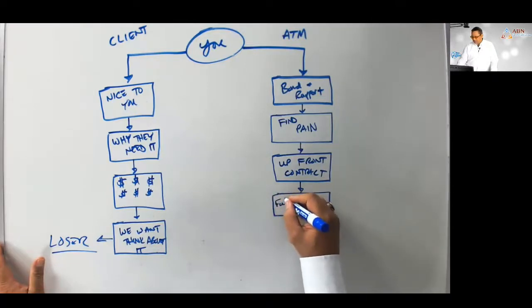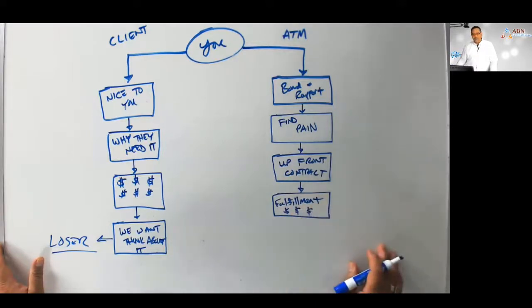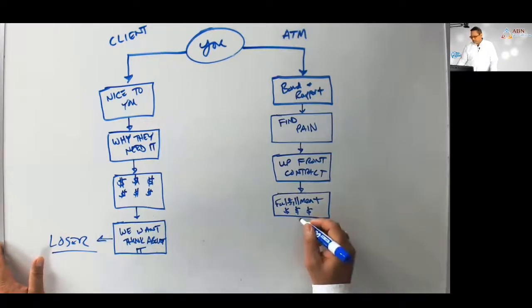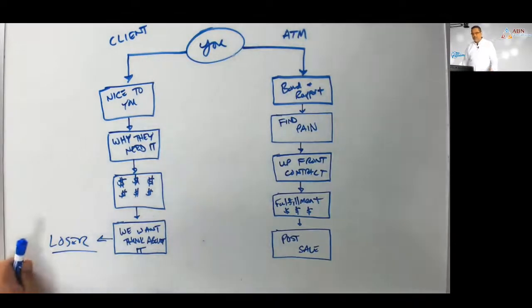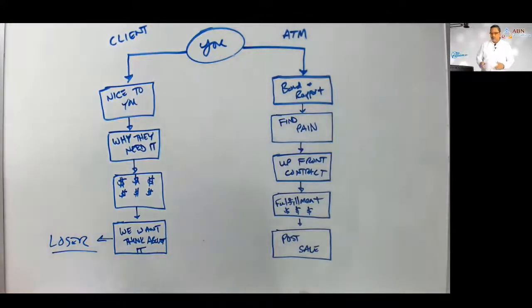Once you get the upfront contract done, then you fulfill the contract. It's called fulfillment. The fulfillment phase is when you show pricing. You show them three options, they're going to pick one, and then you're going to write it up. After the fulfillment is you lock down the sale. This is called the post-sale, where you make sure they feel comfortable with it.